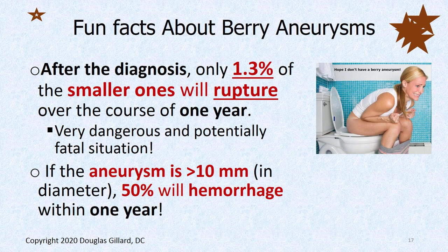More fun facts: after diagnosis, as long as they're small — defined as less than 10 millimeters — only about 1% of them bleed per year. Valsalva events, like pushing down really hard, are a risk factor. If they're over 10 millimeters in size, they're large, and about 50% of them do hemorrhage within one year.